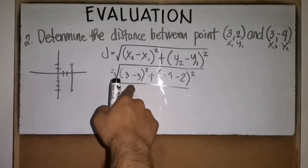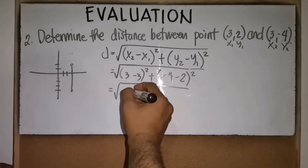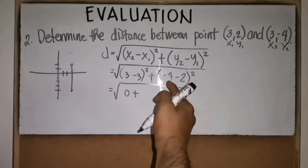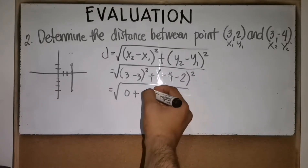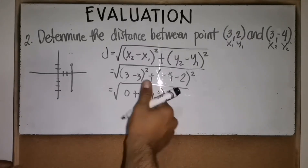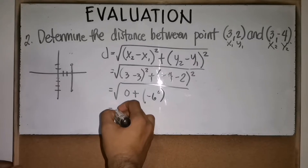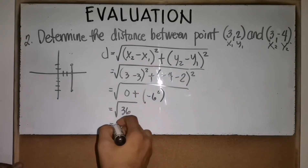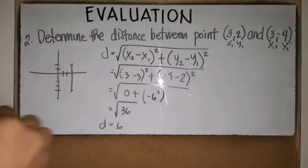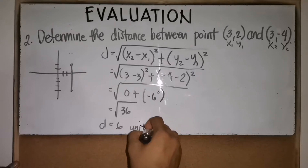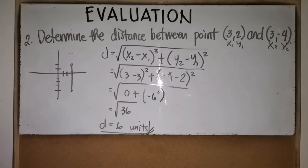Computing: 3 - 3 = 0, so 0² = 0. Then -4 - 2 = -6, and (-6)² = 36. So d = √(0 + 36) = √36 = 6. The distance between the two points is 6 units.